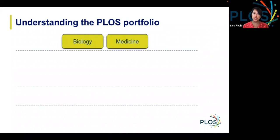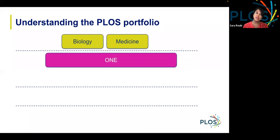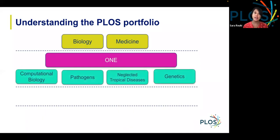A little bit about the PLOS portfolio. We launched in the early 2000s with two highly selective journals, PLOS Medicine and PLOS Biology. The goal of focusing in the biomedical space was to ensure that taxpayer-funded research, and research really meant for the general public to further and better health outcomes, was made openly available. From there, we realized there was real demand for access to ethically and methodologically rigorous research that's not focused on novelty, and that led to the launch and success of PLOS One, the first mega journal. From there, we launched Computational Biology, Pathogens, Neglected Tropical Diseases, and PLOS Genetics.